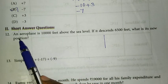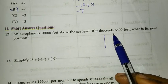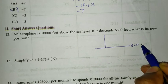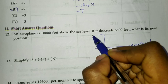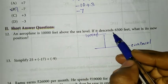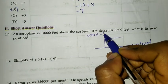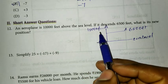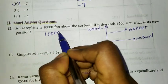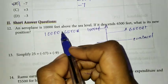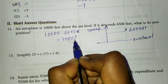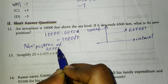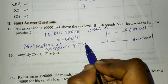Short answer question. Twelfth: an aeroplane is 10,000 feet above sea level. If it descends 6,500 feet, what is its new position? The aeroplane starts at 10,000 feet. When it descends 6,500 feet, we subtract: 10,000 minus 6,500 gives 3,500 feet. So the new position of the aeroplane is 3,500 feet above sea level.